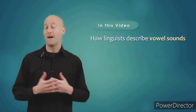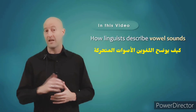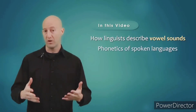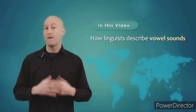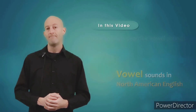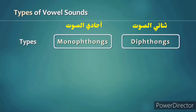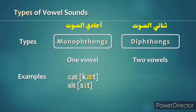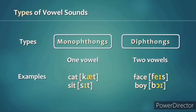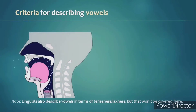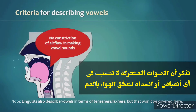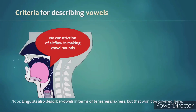Welcome. In this video, we will be talking about how linguists describe vowel sounds. Like the consonant video, we'll only be talking about the phonetics of spoken languages, and we will be focusing on vowel sounds as used in North American English. There are two types of vowel sounds: monophthongs, which involve one vowel quality, and diphthongs, which involve two vowel qualities. The three criteria linguists use when describing vowel sounds are height, backness, and roundedness.